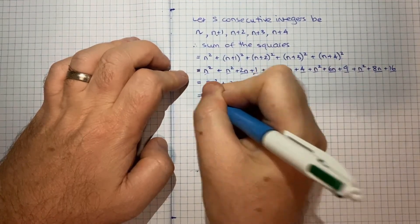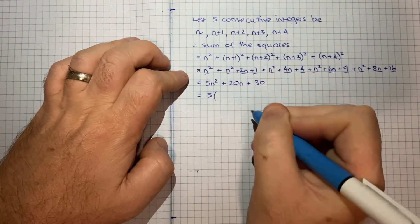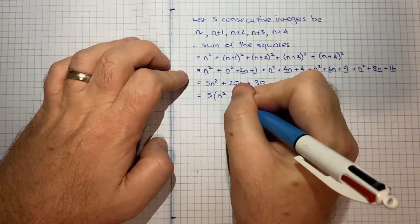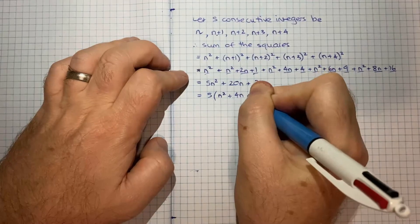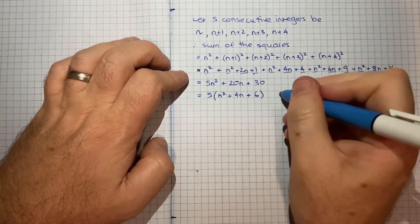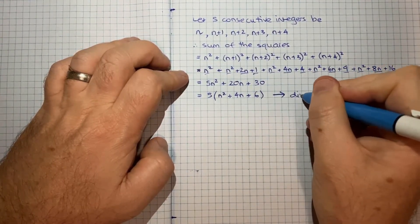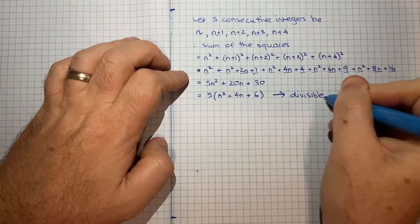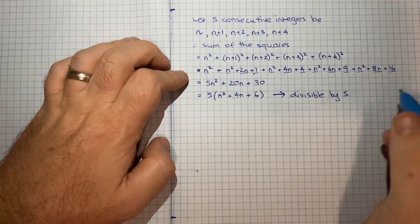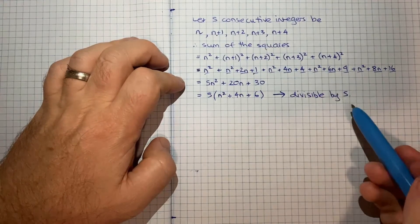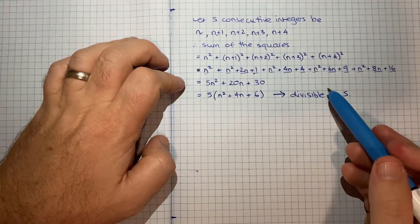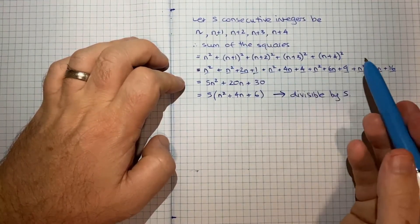So now I can say that's equal to 5 bracket n squared plus 4n plus 6. And therefore, it's divisible by 5. So that ended up being simple enough. I guess we kind of just got lucky there.